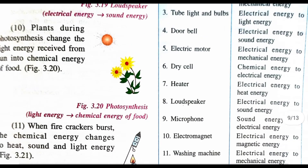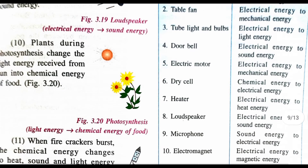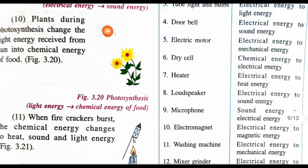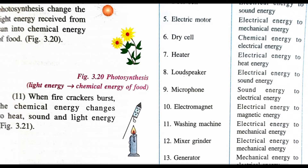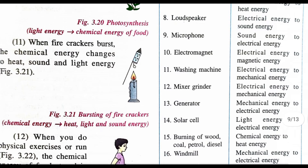Here is an important table showing what energy converts to which form: photosynthesis converts to chemical energy; table fan converts to mechanical energy; tube light and bulb convert to light energy; doorbell converts to sound energy; electric motor converts to mechanical energy; dry cell converts chemical energy to electrical energy; heater converts electrical energy to heat energy; loudspeaker converts electrical energy to sound energy; microphone converts sound energy to electrical energy.